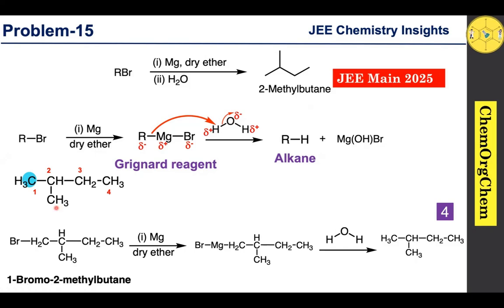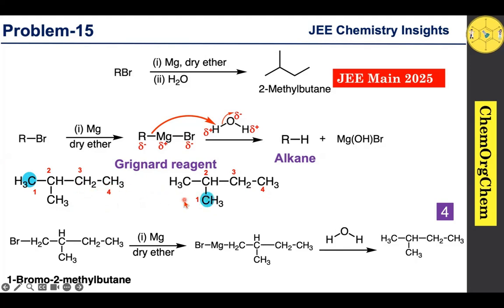Now, if we consider placing bromine on the methyl branch carbon and redraw the structure with renumbering, we find that this is essentially the same as one of the previous structures. Therefore, we do not count it as a new isomer. There are only four possible alkyl bromides that eventually yield 2-methylbutane after the Grignard reaction with magnesium in dry ether followed by water.